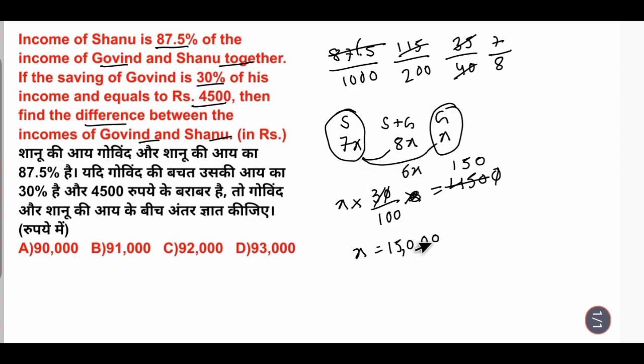Simply, the X value I have got is 15000. So 6X equals 6 into 15000, which gives us 90,000. This is option number A.